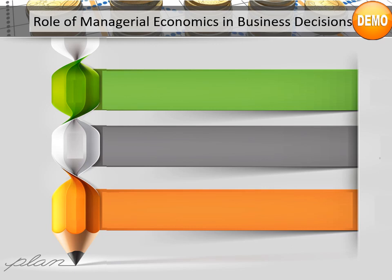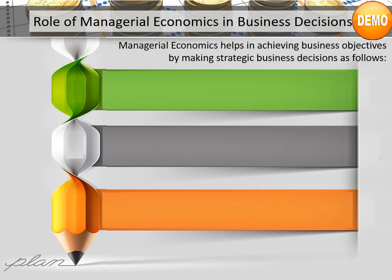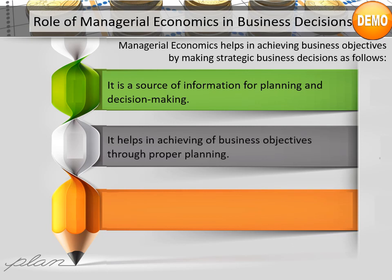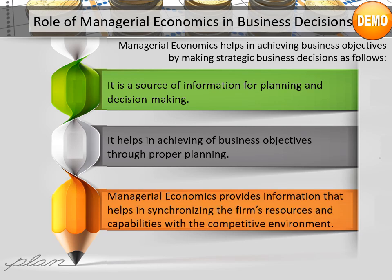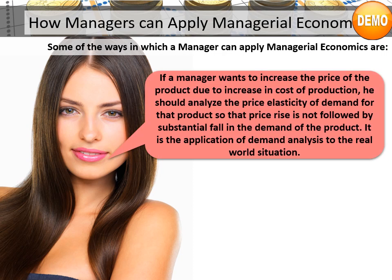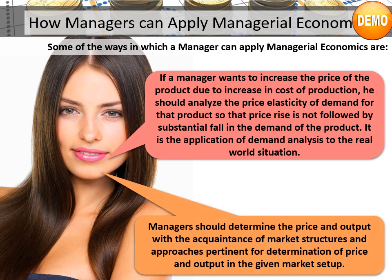Role of managerial economics in business decisions: Managerial economics helps in achieving business objectives by making strategic business decisions. It is a source of information for planning and decision-making. It helps in achieving business objectives through proper planning. Managerial economics provides information that helps in synchronizing the firm's resources and capabilities with the competitive environment. For example, if a manager wants to increase the price of a product due to an increase in cost of production, he should analyze the price elasticity of demand for that product so that the price rise is not followed by a substantial fall in demand. Managers should also determine price and output with knowledge of market structures and approaches pertinent for price and output determination in the given market setup.